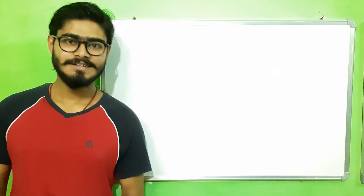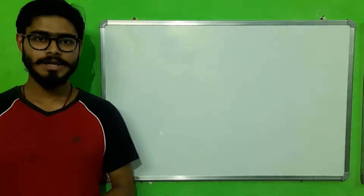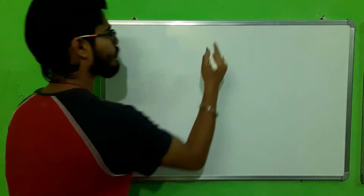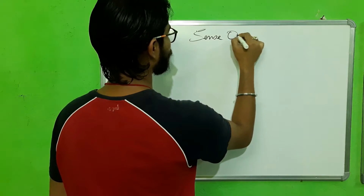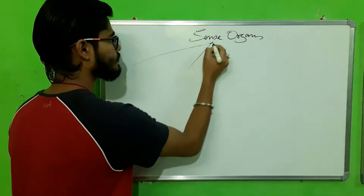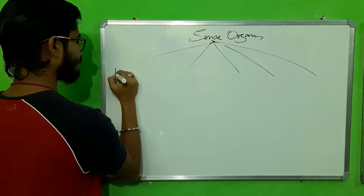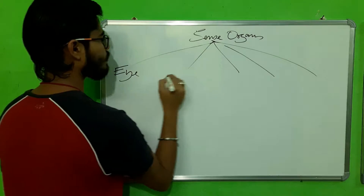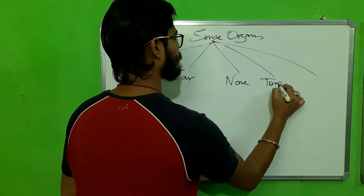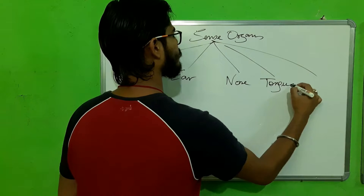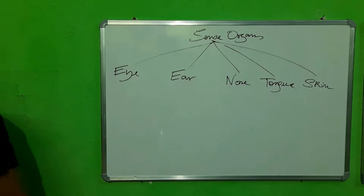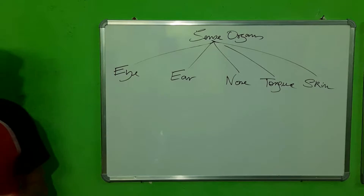Hello guys, welcome back to my channel. Hope you're all doing well. Today we are going to talk about sense organs. We know basically there are five sense organs in our body: the eye, ear, nose, tongue, and skin. Now one by one we'll talk about the functions — what is the function of the skin?